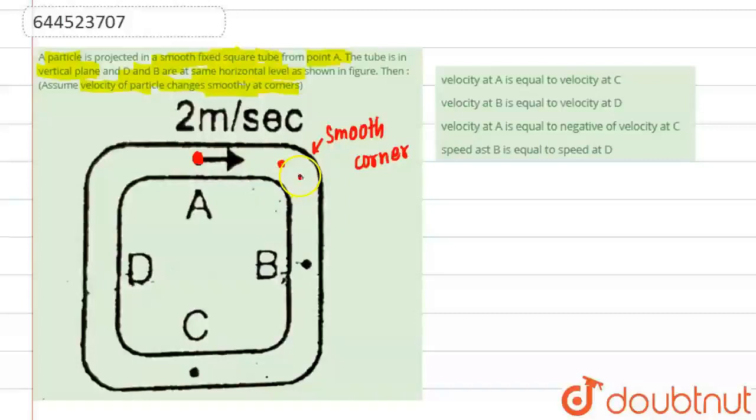The particle will move and at point B it will be moving in this direction with 2 meter per second. Similarly, at point C it will be moving with the velocity of 2 meter per second again. At point D it will be moving with the speed of 2 meters per second, and it will continue its motion.